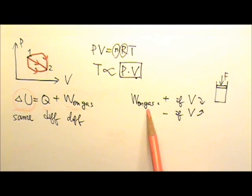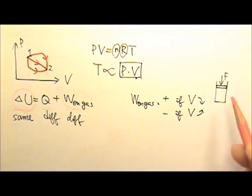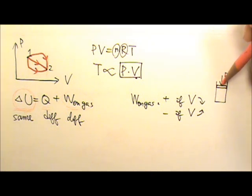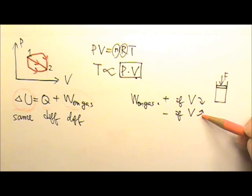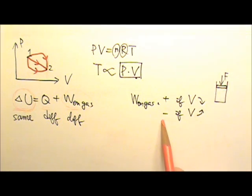The work done on the gas is positive if the volume decreases, it's negative if the volume increases. Because if we have a gas, let's say we compress it with a force pushing down, and then volume decreases because the piston goes down. The work done by this external agent on the gas is positive because the external agent's force and the displacement, they are in the same direction. So the work done by this force is positive. If instead the gas expands, that means the piston goes up. So force goes down, displacement goes up, that means this force would do negative work.